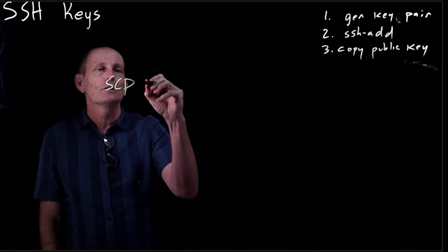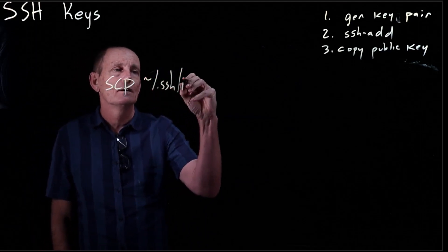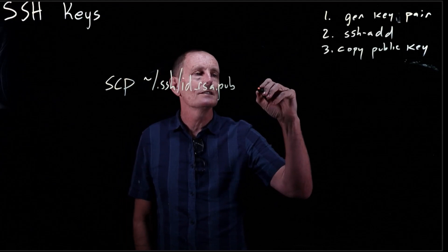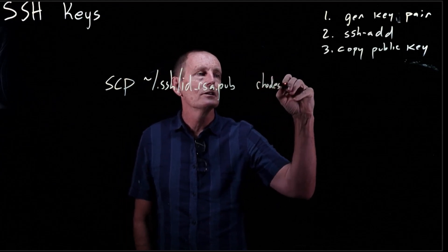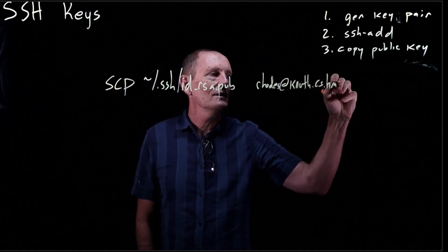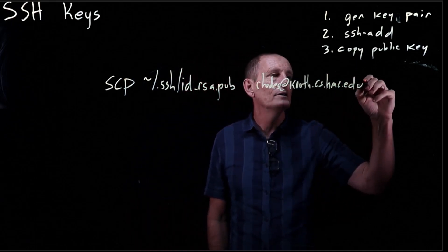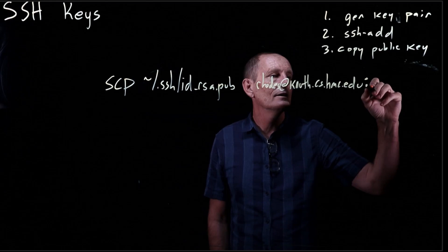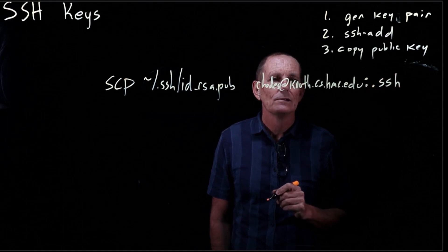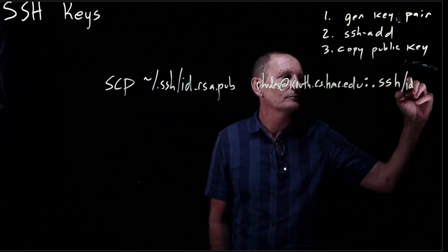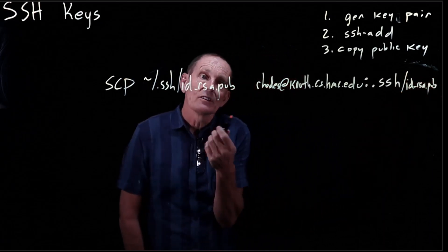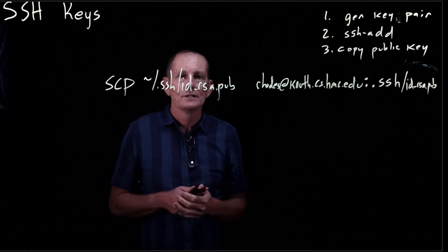So we'll copy our public key to where we're going. In this case, it's going to be roads@knuth.cs.hmc.edu, and we want to put that in the .ssh directory. Once we get there, it's still going to prompt us for our password when we do this.